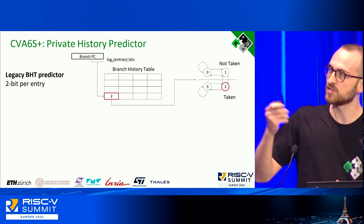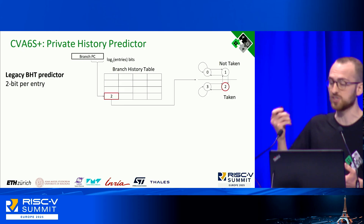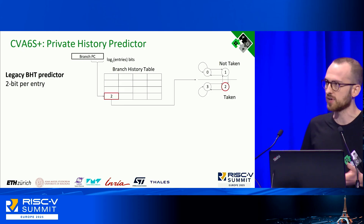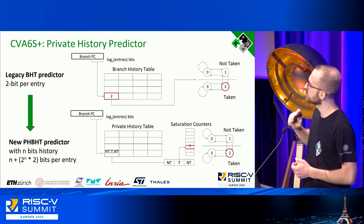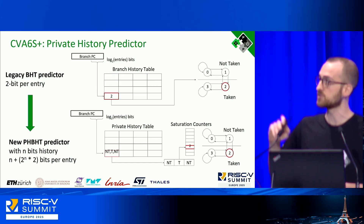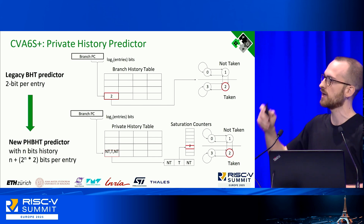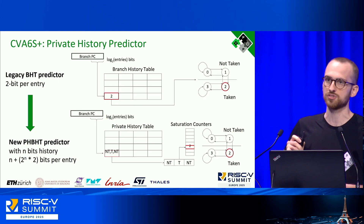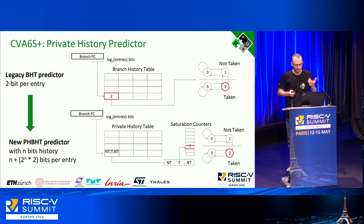The previous method used only the address of the PC with no information on how we reached a specific branch, since dynamic execution can reach the same branch through different paths. By adding a private history table, we first use bits of the PC to index into a table tracking individual histories of different branches. Each entry has its own dedicated saturation counter indexed by that history. This boosts the correct prediction rate from 82% to 92%.